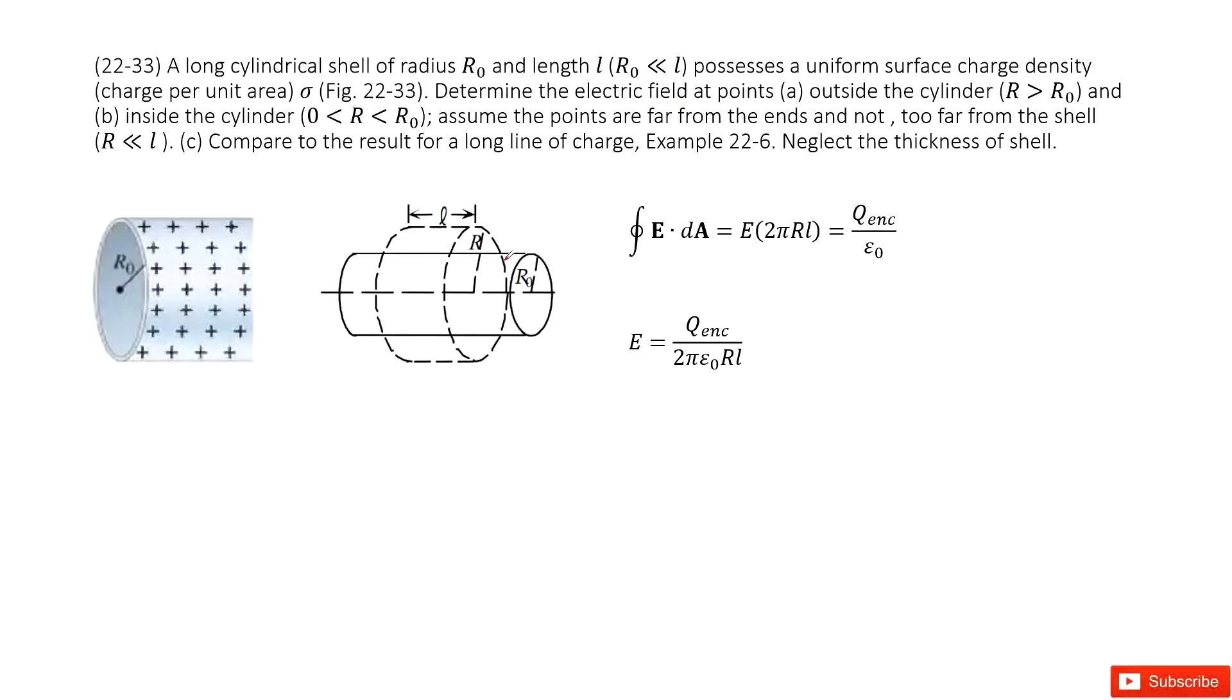So for this one, we can see if this is outside the cylindrical object, we can see that r is larger than R₀. We can draw a Gaussian surface, look like this one.